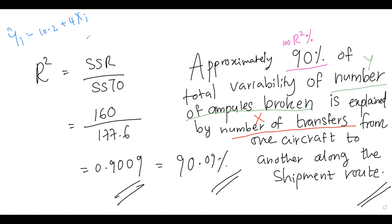When interpreting R-squared, do not write 'approximately 90% of the total variability of Y is explained by X' using those literal letters — use the actual variable names from the problem. If the question gives names for the response and predictor, you must use those names. Interpretations must always be in plain language. In regression, we expect you to use the formula SSR divided by SSTO, but computing it via Pearson's r squared is also acceptable.